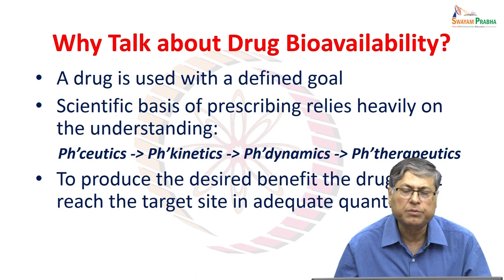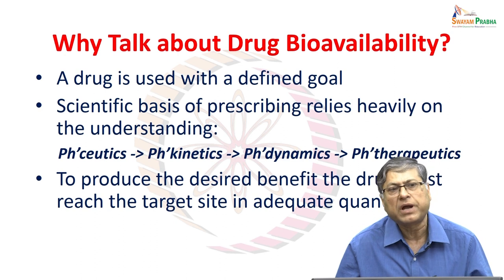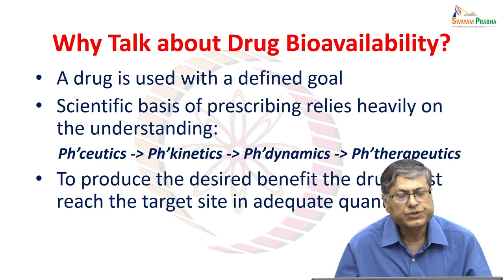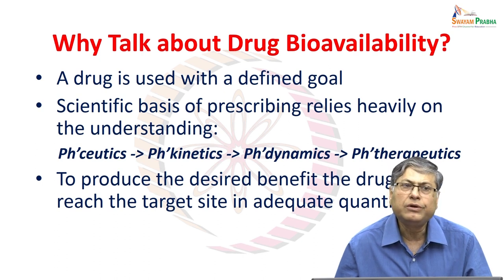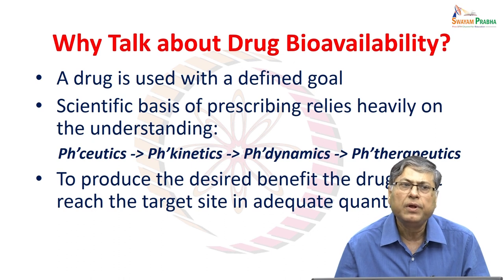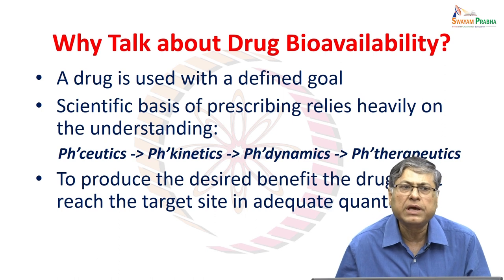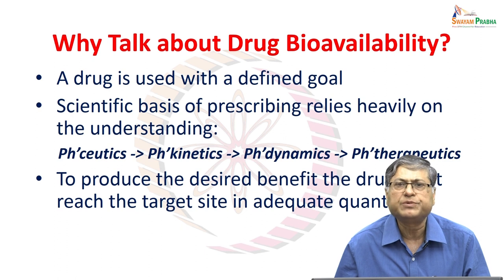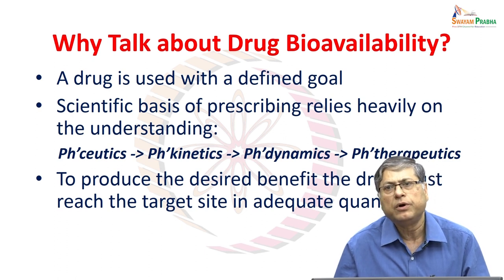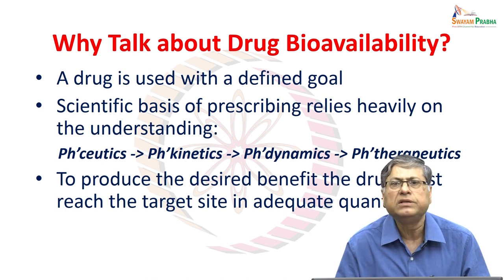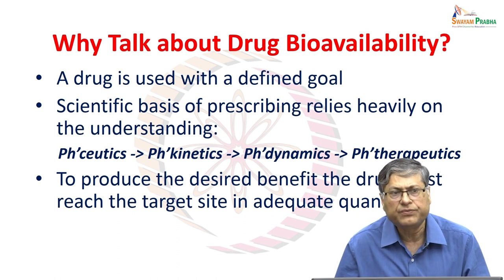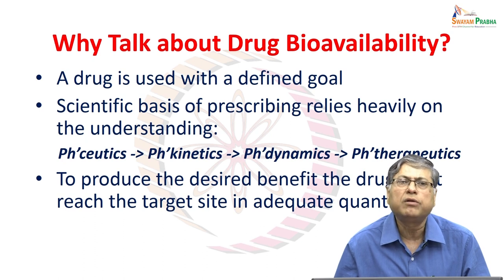Although our primary interest is in pharmacotherapeutics, we need to understand the prior steps of pharmaceutics, kinetics, and dynamics. To produce the desired benefit, the drug must reach the target site in adequate quantity. This adequate quantity is important - to have drug molecules reaching the target site in adequate quantity, we must decide the primary dosing, the route of administration, and what the bioavailability characteristics are - whether a substantial portion of the dose given orally is lost during first passage through the liver. These factors determine how much is ultimately available for producing pharmacological effects - that is what bioavailability is about.